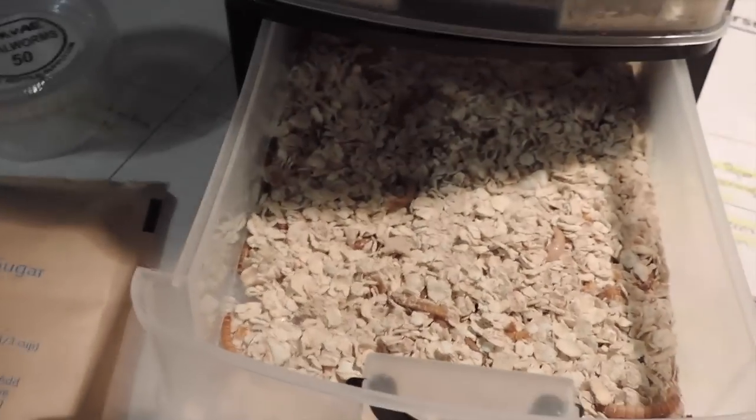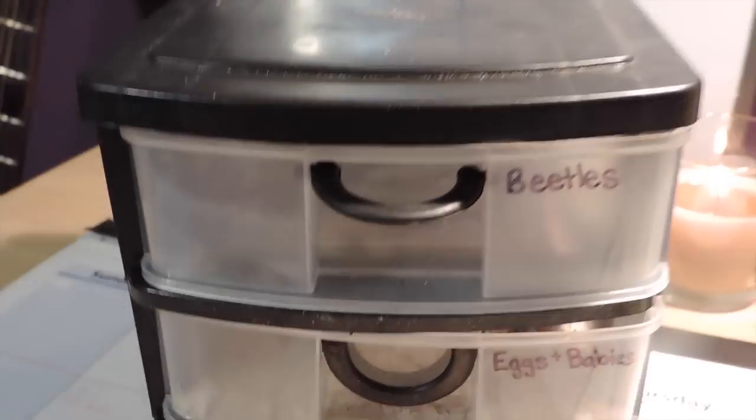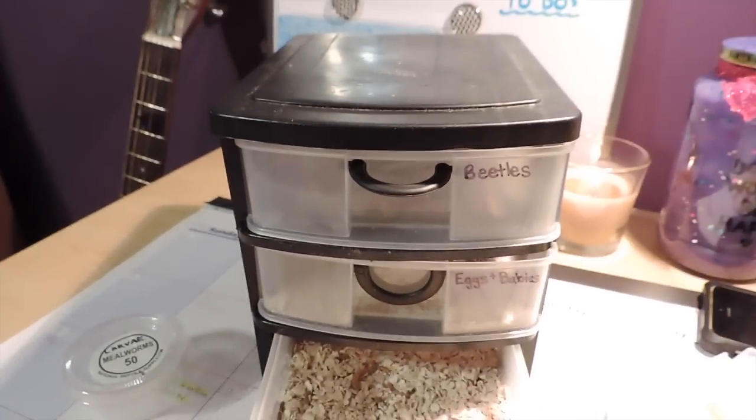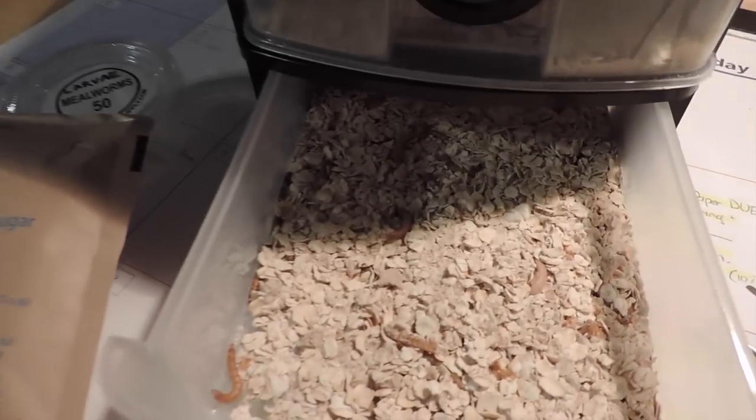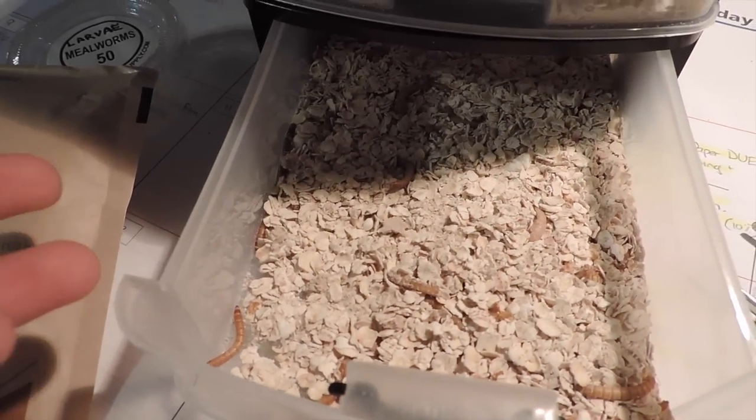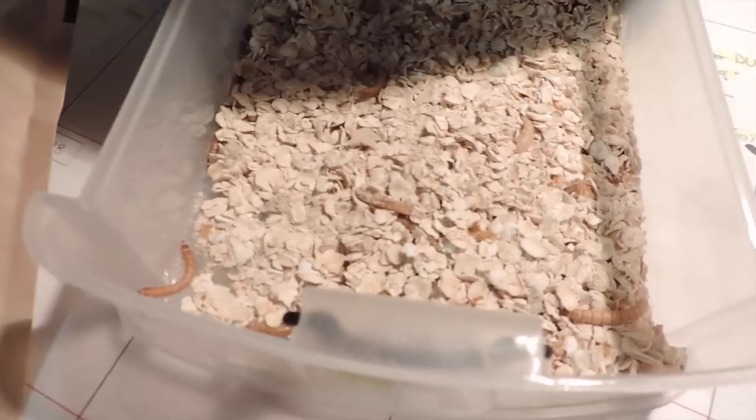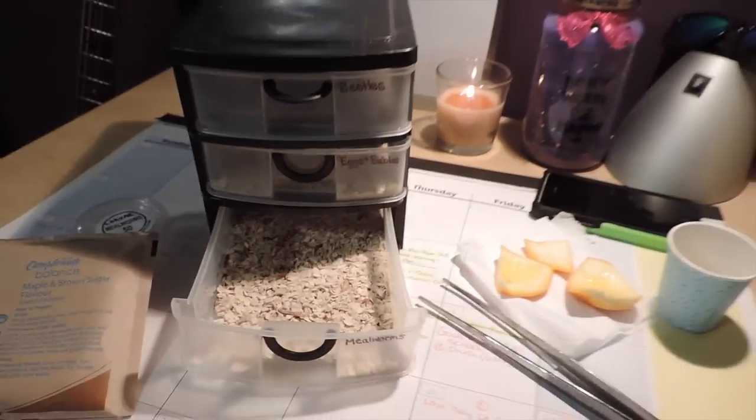What to put in the drawers: I use just normal instant oatmeal. Just load up your drawers with those. They eat the oatmeal and they also burrow and lay their eggs in it, so it's perfect and it's really cheap to buy.